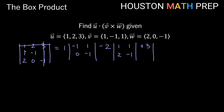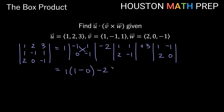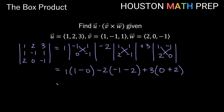Three: cross out the row and column that 3 is in, giving us 1, -1, 2, 0. Now we compute: 1 times ((-1)(- 1) minus (0)(1)) equals 1 times 1 = 1. Minus 2 times ((1)(-1) minus (2)(1)) equals -2 times (-3) = +6. Plus 3 times ((1)(0) minus (2)(-1)) equals 3 times 2 = +6. So we get 1 + 6 + 6 = 13. That is our box product, our triple scalar product u dot v cross w.